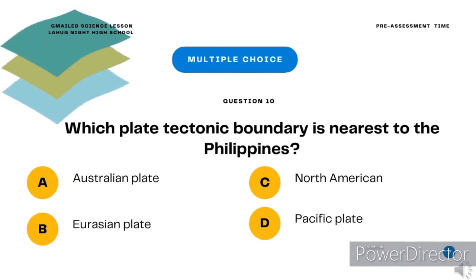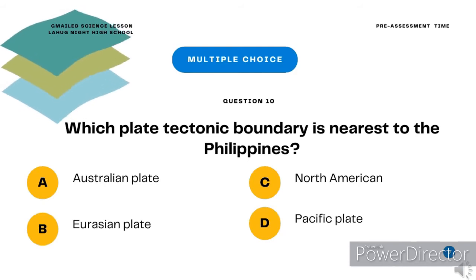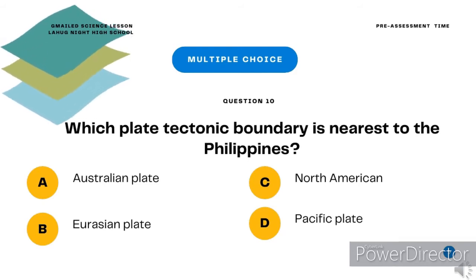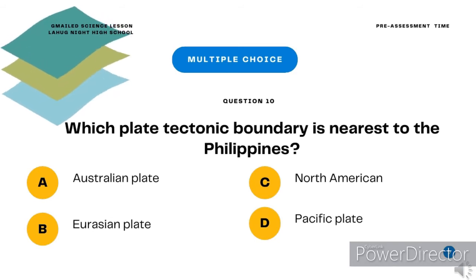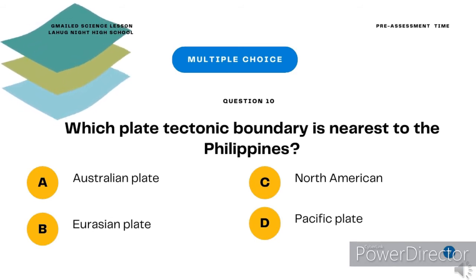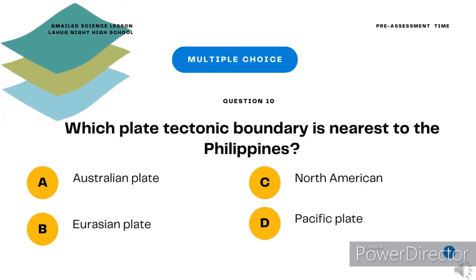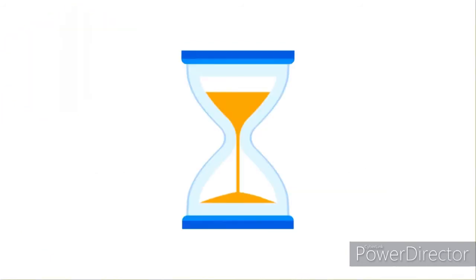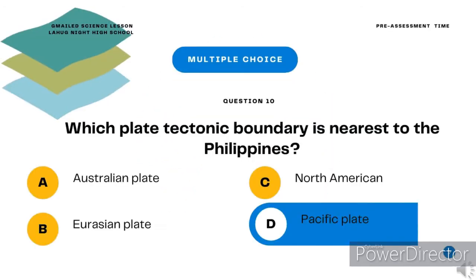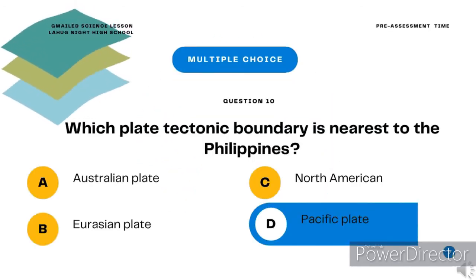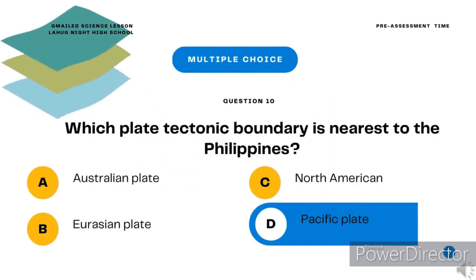Multiple choice question 10. Which plate tectonic boundary is nearest to the Philippines? A. Australian plate. B. Eurasian plate. C. North American plate. D. Pacific plate. The correct answer is letter D, Pacific plate.